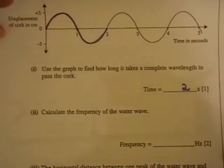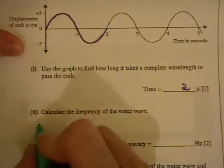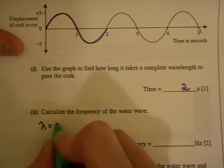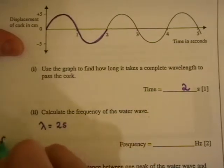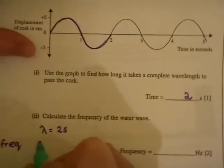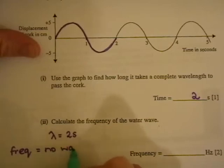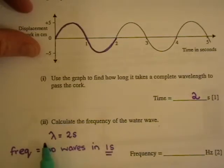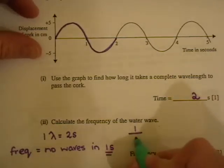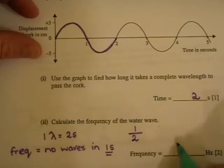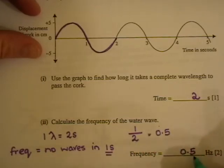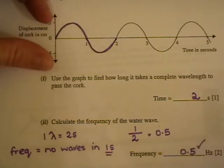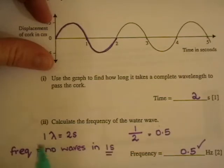Part two, calculate the frequency of the water wave. So you know that you have one wavelength, and that takes two seconds. So frequency, if you always remember your definition of frequency, frequency is the number of waves in one second. So we know it takes one complete wavelength two seconds. So in one second then we have got one wavelength over two. And the answer then is equal to a half. So you get an answer of 0.5 Hertz. So you get one mark for your answer, and you would get one mark for suggesting that one wavelength is two seconds.